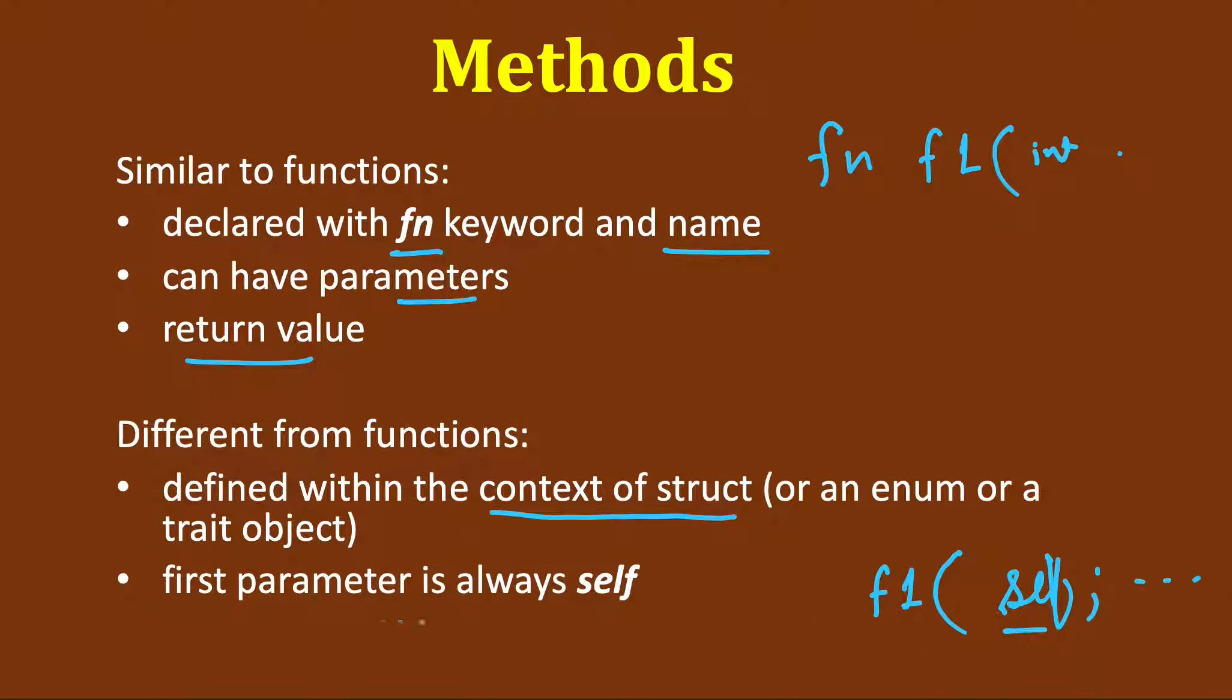The way to call is that we create an instance of, let's say, a struct Rectangle that we saw in the last example. So there is a rectangle rect.